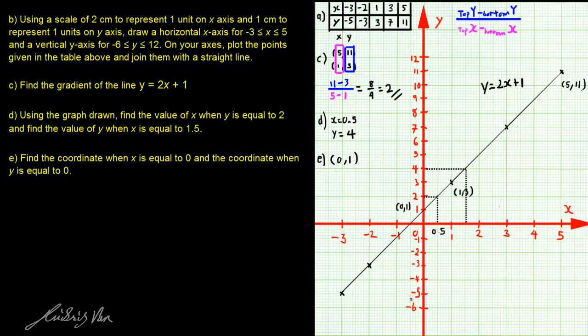Then when y is equal to 0, the coordinate is basically the point where the straight line cuts the x-axis, or we like to call it the x-intercept, which is negative 0.5, negative 1.